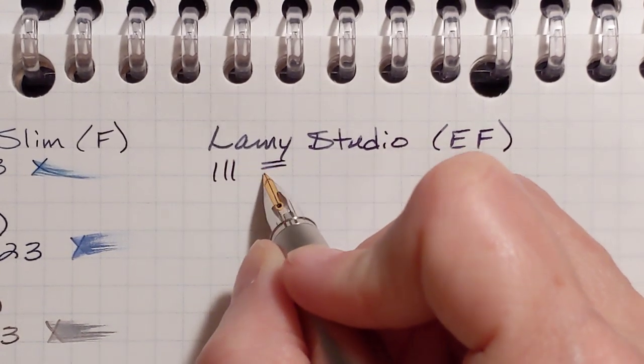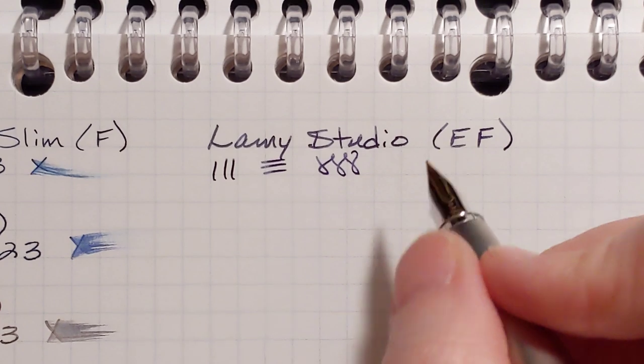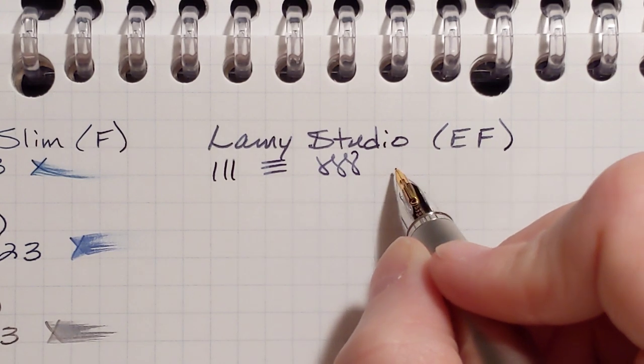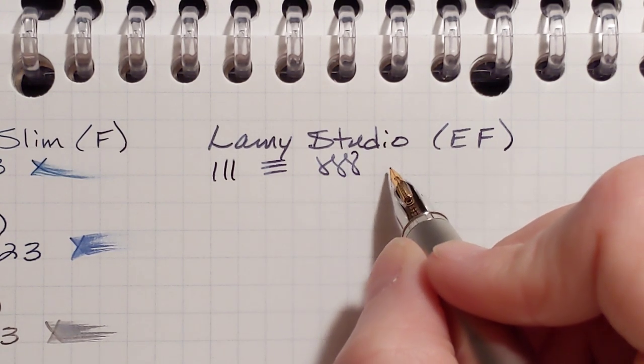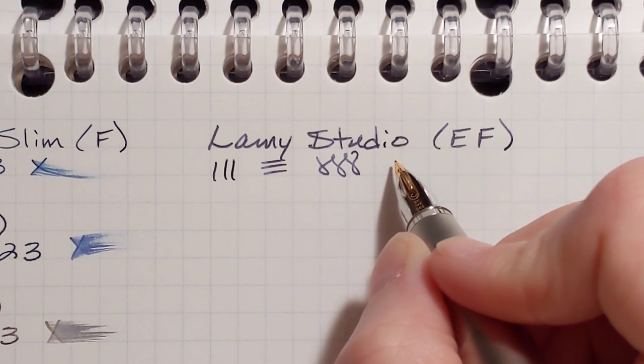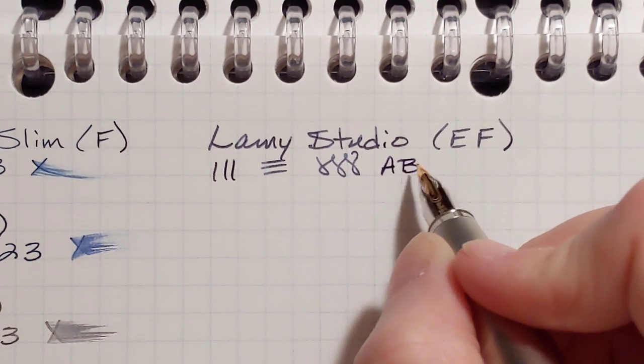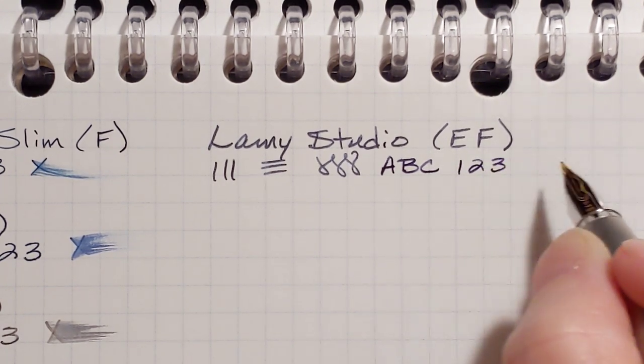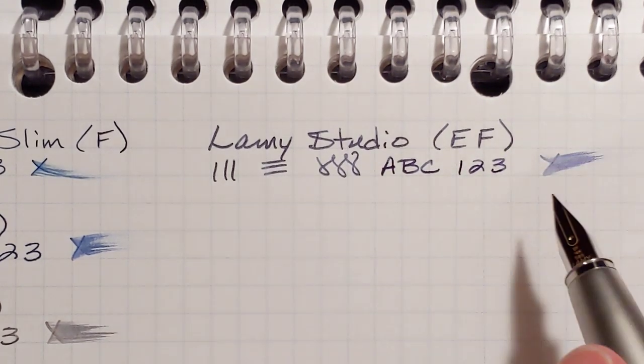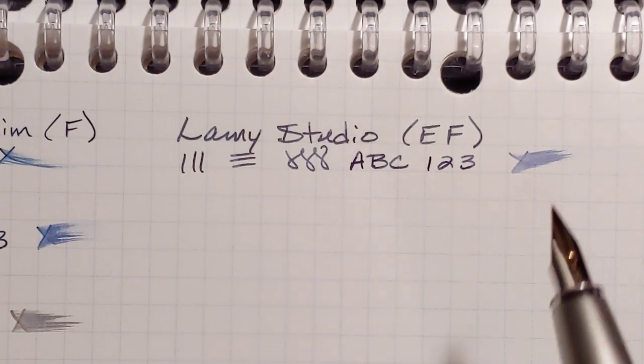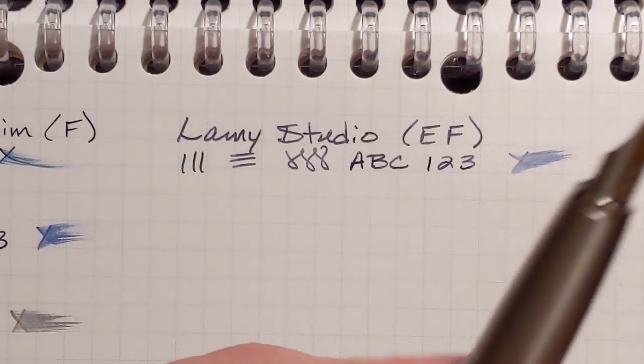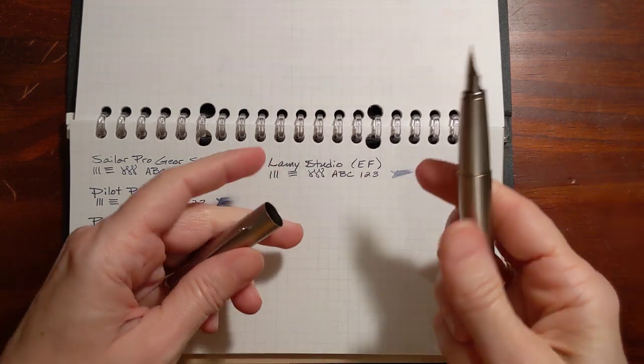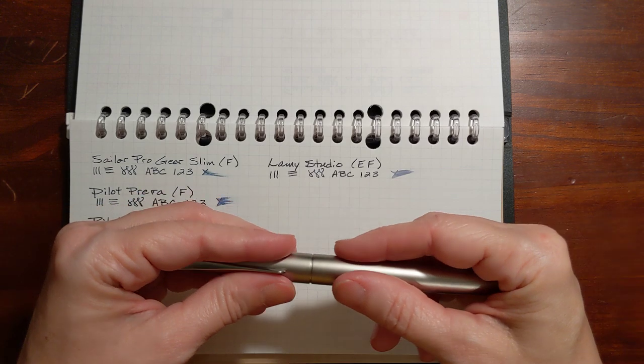Now, when I use Lamy Blue Black in any of my steel nibs, I've got a CP1 and a logo. I'm just not very fond of it. They tend to write a little drier. But I tend to like this Blue Black in this pen. And this is the first time. This inking up of it is the first time I've used this Blue Black in this pen.